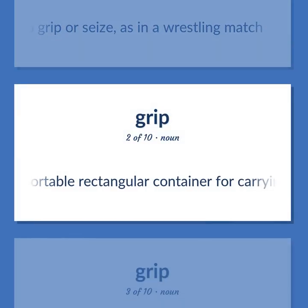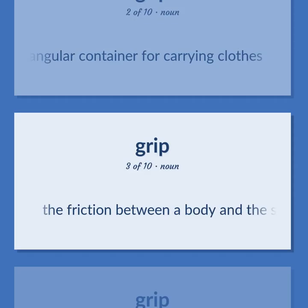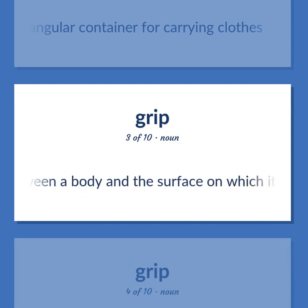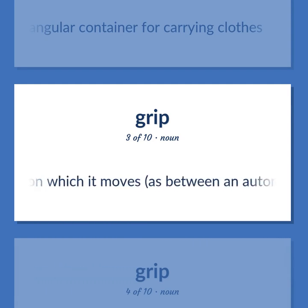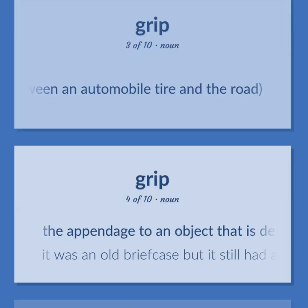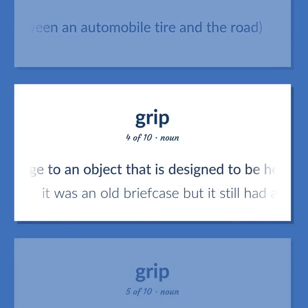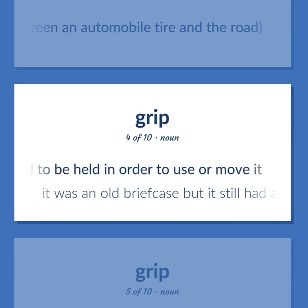A portable rectangular container for carrying clothes. The friction between a body and the surface on which it moves, as between an automobile tire and the road. The appendage to an object that is designed to be held in order to use or move it. It was an old briefcase but it still had a good grip.